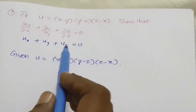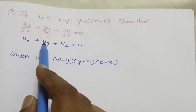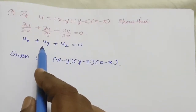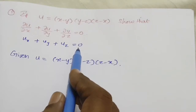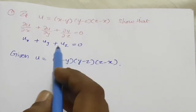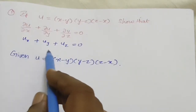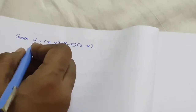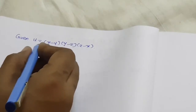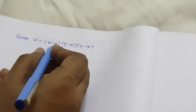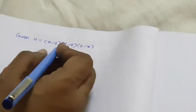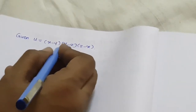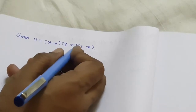Show that means we have to prove that left hand side equals right hand side. For that purpose, first I consider the left hand side value. The problem gives the value of u as (x minus y) into (y minus z) into (z minus x). That is a multiplication of three terms.